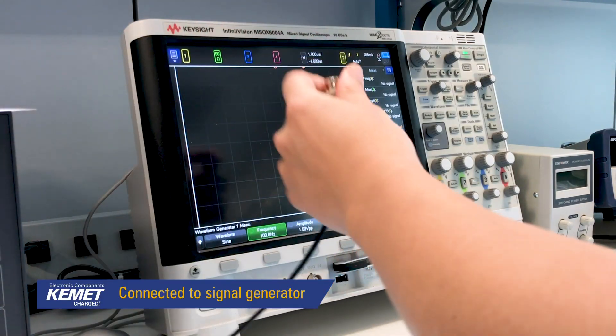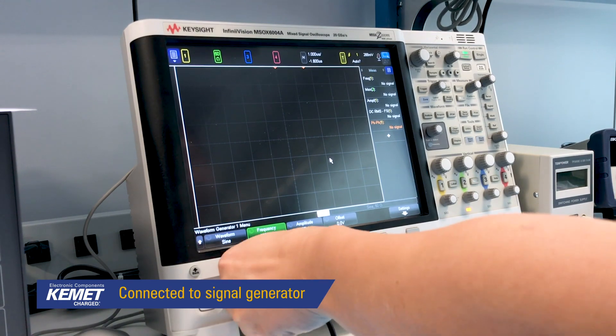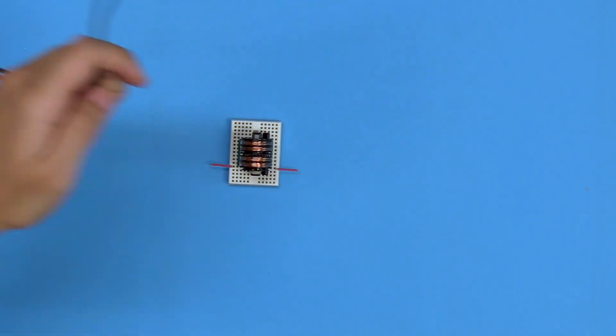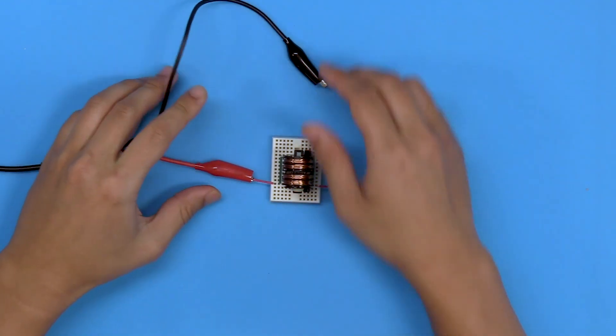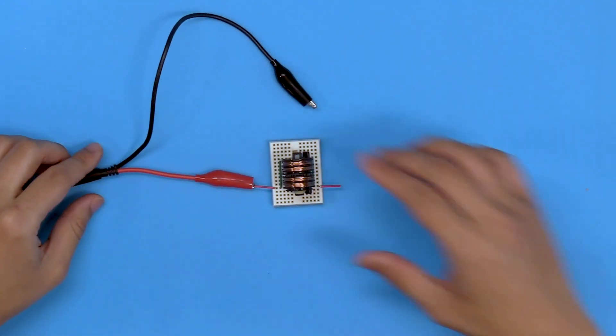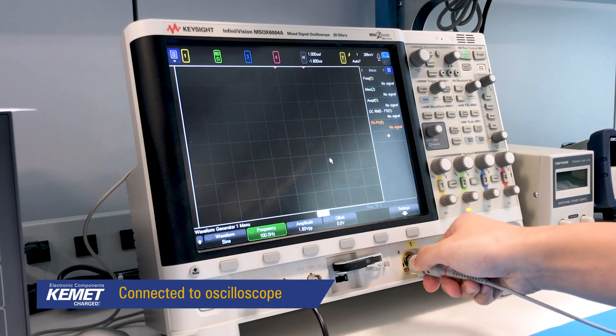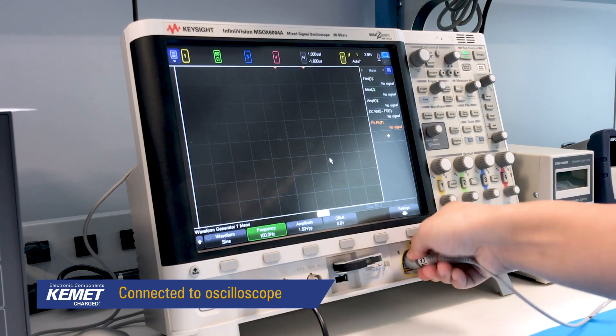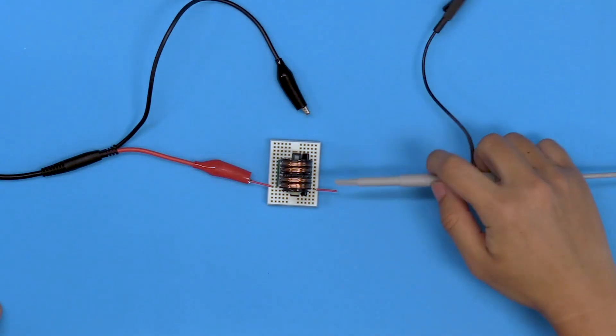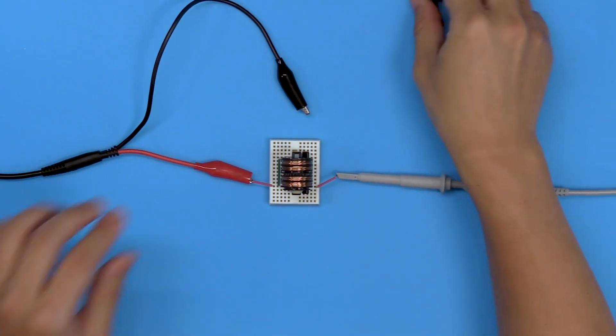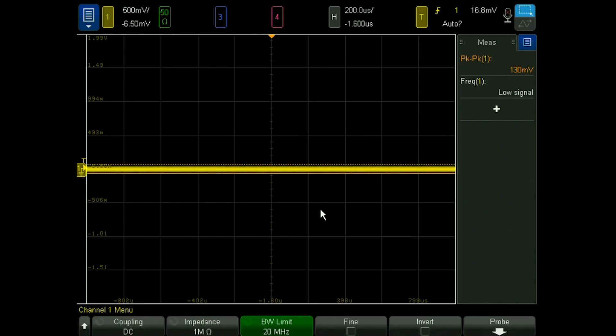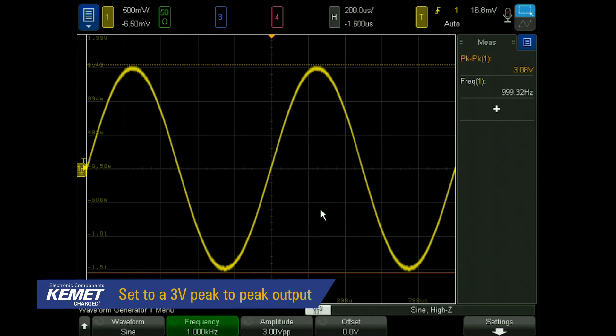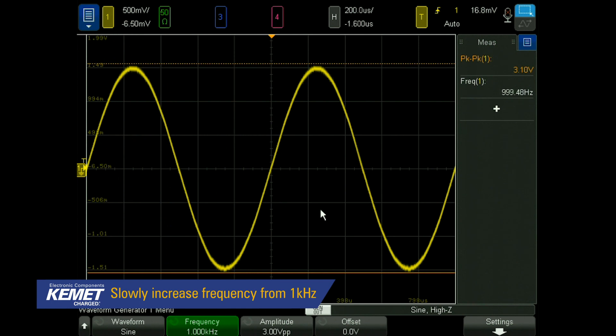One end will be connected to the signal generator. And the other end will be connected to the oscilloscope. The signal generator is set to a 3-volt peak to peak output and we'll start at 1 kilohertz and ramp our way up from there.